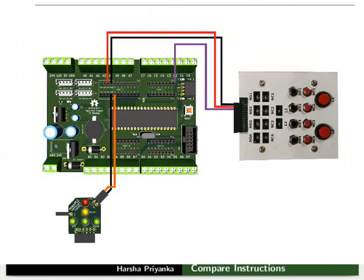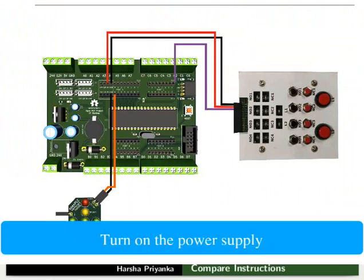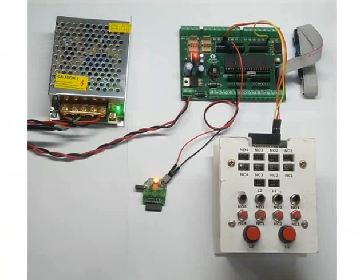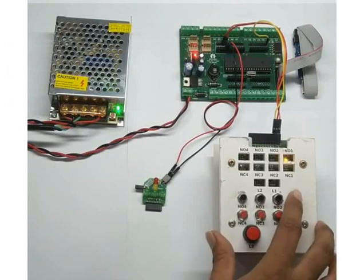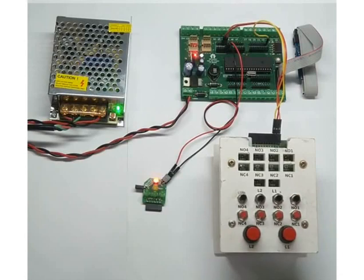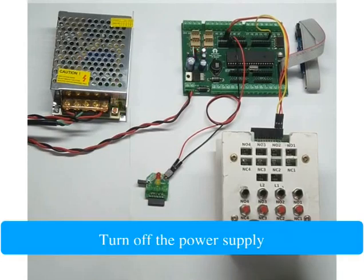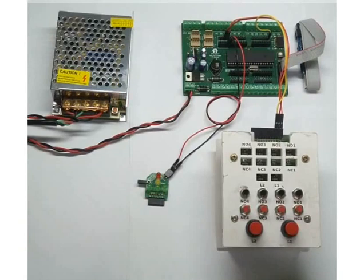After making all the connections properly, turn on the power supply. We can observe that the LED will be glowing initially. It will turn off once NO1 is pressed. The red LED will glow again after pressing NO1 for 3 more times. Thus, LED glow indicates that the count value of the counter is 0. Turn off the power supply. Try the remaining compare instructions on your own.